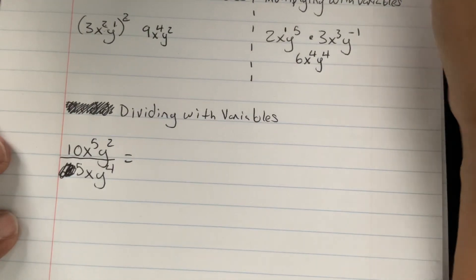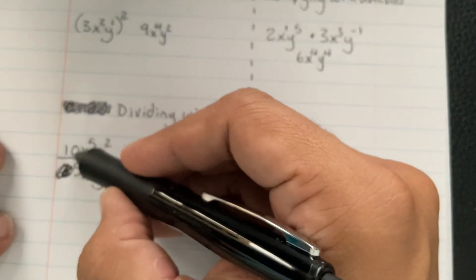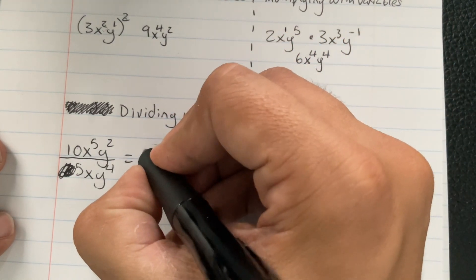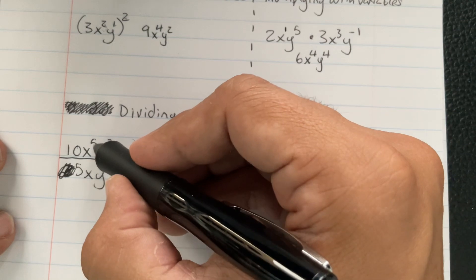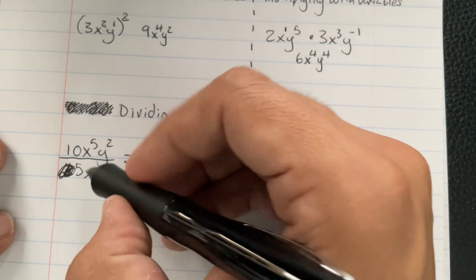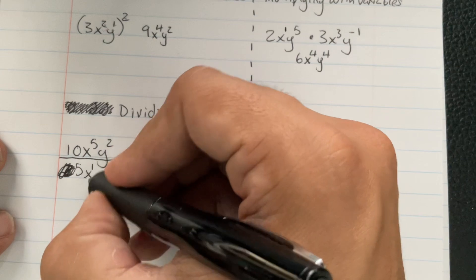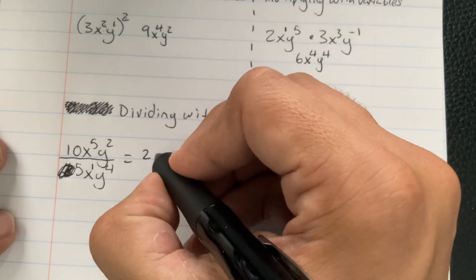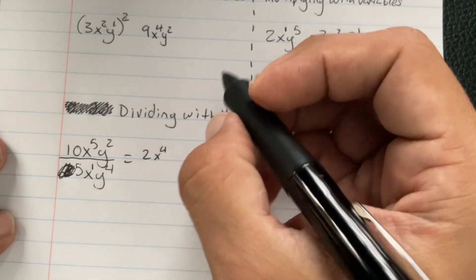Now dividing with variables. So the 10 is going to divide with the 5, and that's going to make a 2. x to the 5th divided by x. Remember, there's a 1 here. So the exponents are going to subtract. So that's going to cause it to be 5 minus 1. That's going to be x to the 4th.